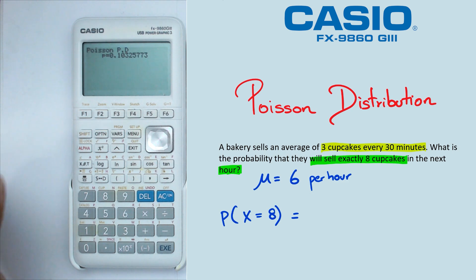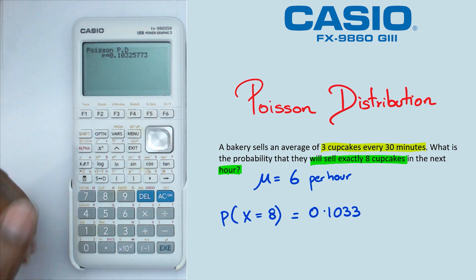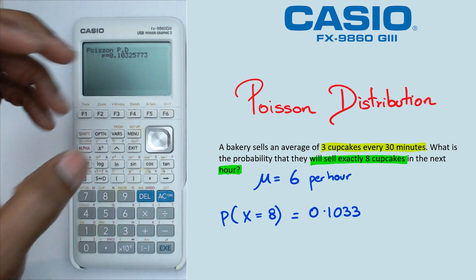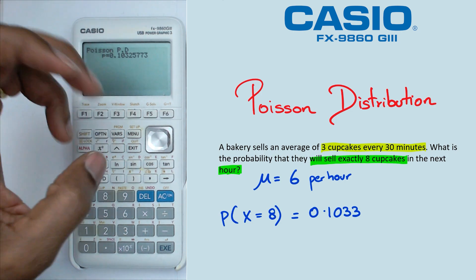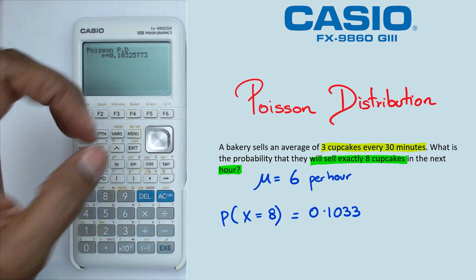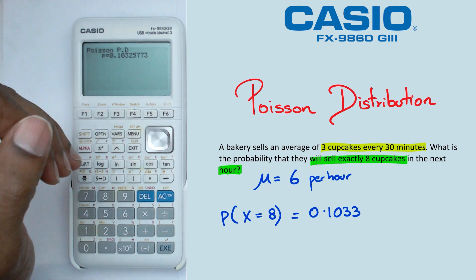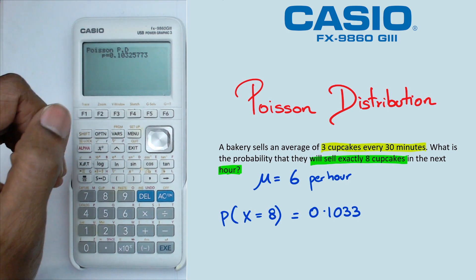And what we've got here is a probability of 0.1033. And folks, that pretty much covers how to find exact value probabilities for Poisson distribution on this particular Casio graphics calculator.